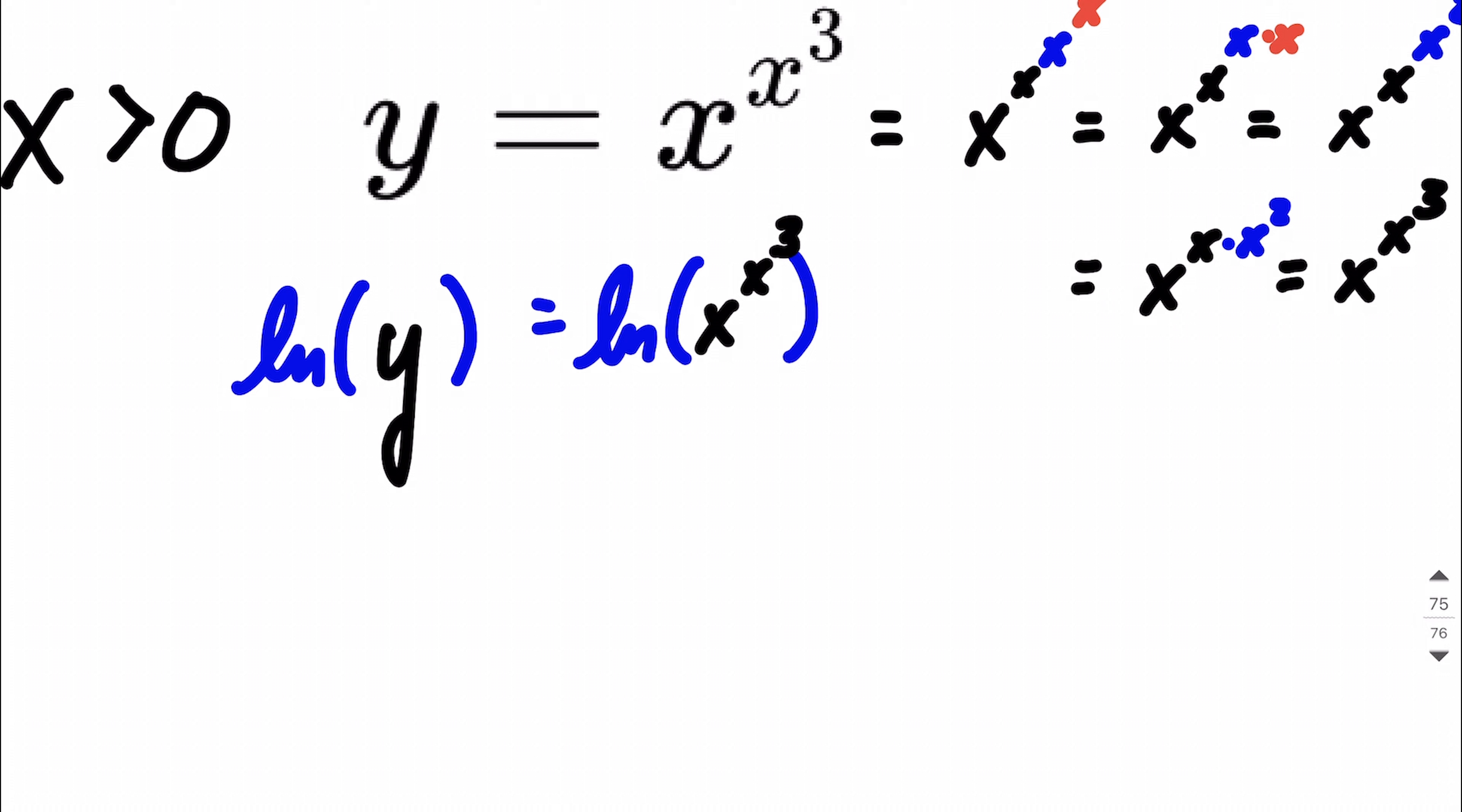Specifically, the one that says we're allowed to bring the exponent down in front and make it a multiple. So I'm going to rewrite this as x to the third power, over on the right-hand side, multiplied by the natural log of our base, x, is still equal to the natural log of y over on the left-hand side.